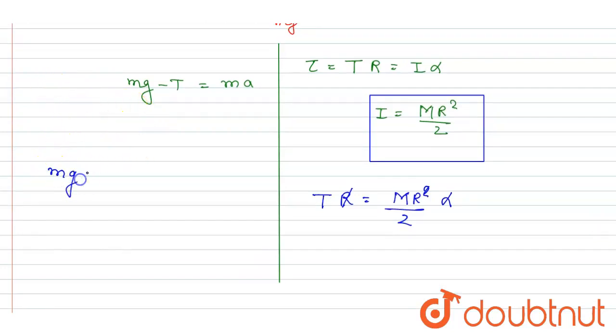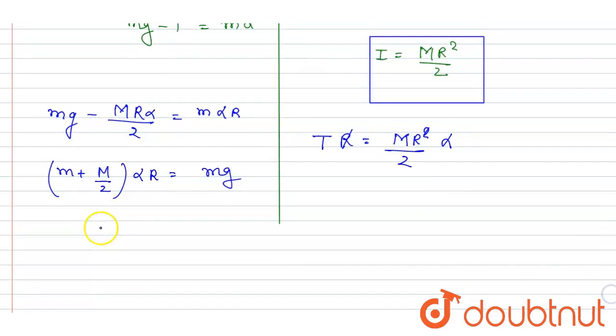I will write MG minus MR alpha by 2. And we know that this acceleration is also equals to alpha R. Right? So now, we can solve it for alpha. Right? So I will write M plus capital M by 2 into alpha R equals MG. Right? So I will write the alpha equals this.